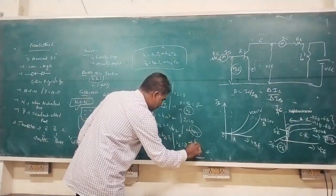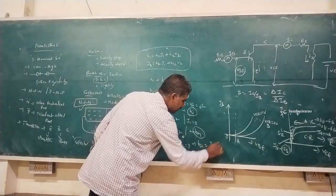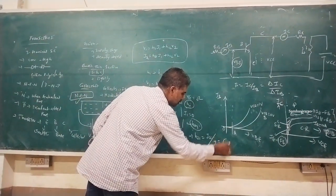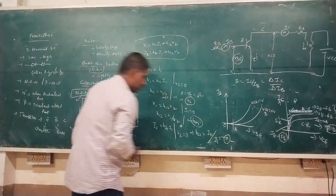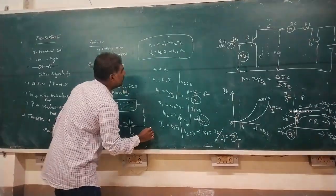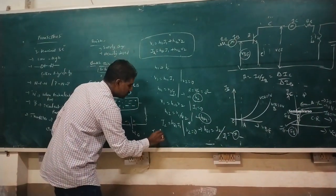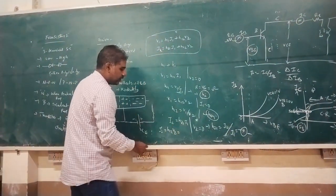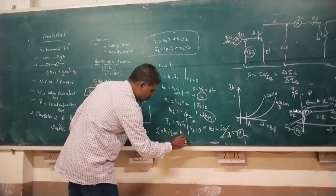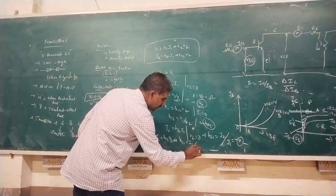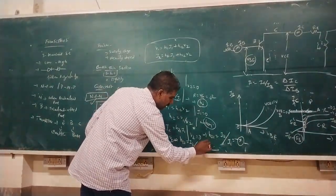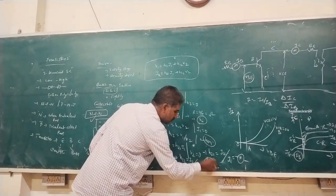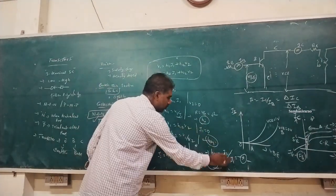H21 acts as a current source and is called HF (forward current gain). For H22, setting I1 equal to zero: H22 = I2/V2, which is an admittance (reverse of voltage), denoted HO (output admittance).